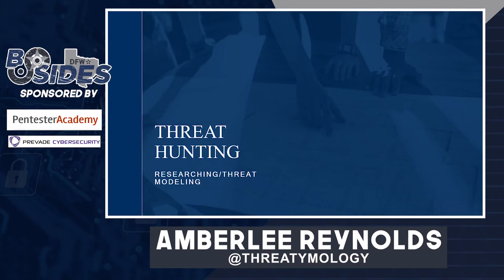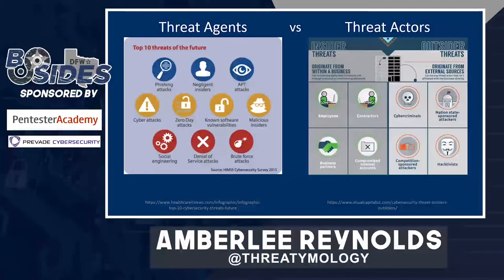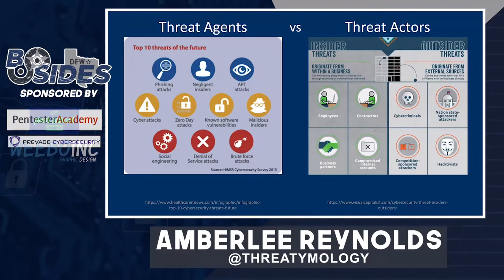Moving on to threat hunting research and threat modeling. When you first start setting up your threat hunting team, one of the first things you'll do is a lot of research — taking in and ingesting a lot of data and organizing it in a specific way. I tend to create theories and predictions based on behaviors or artifacts I think I'll find, and they fall into two categories: threat agents (the actual attacks themselves) or threat actors (the people and machines performing the attacks). You can look for attacks without worrying about attribution, or if you have a particular APT with repeated behaviors, you can look for artifacts specific to that group.